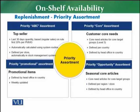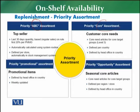Priority assortment is of four types: priority ABC assortment, priority core assortment, priority promotional assortment, and priority opportunity assortment. ABC assortment refers to the top-seller articles — the fast-running articles that are very quickly sold. These are the first priority to replenish. Core assortment articles are the customer's core needs; for example, when a customer enters a bakery, their core needs are bread, eggs, milk — these are core expectations.